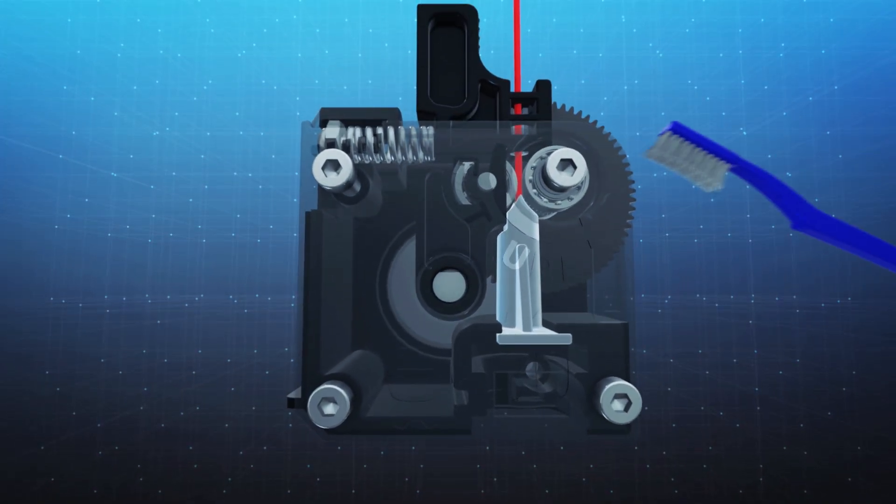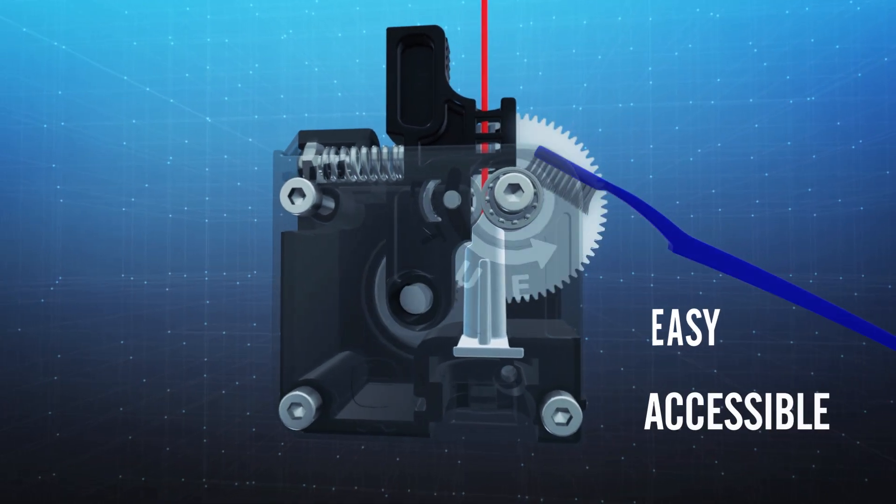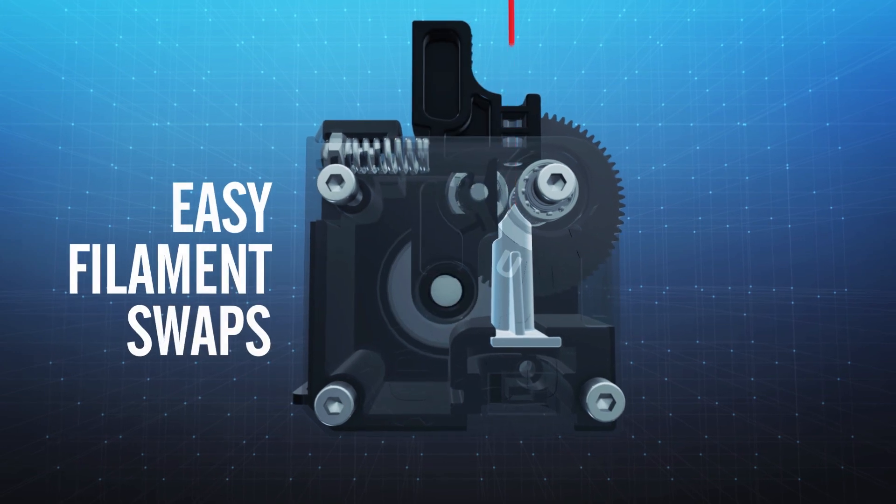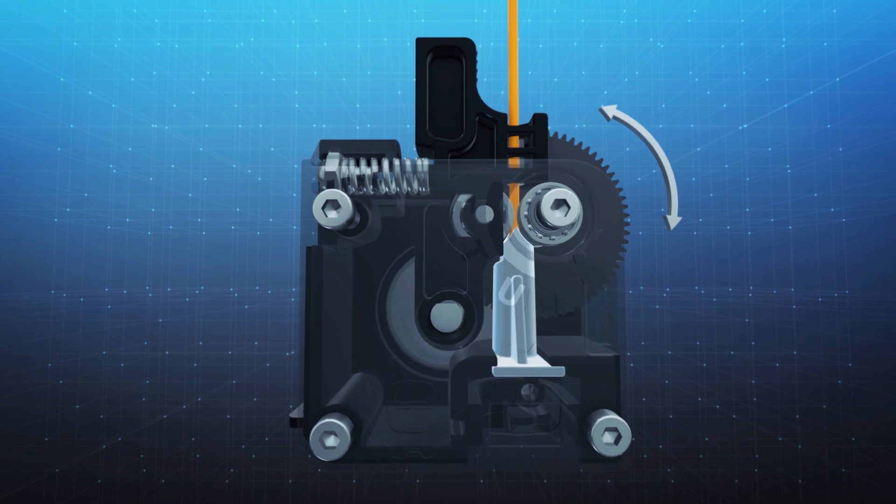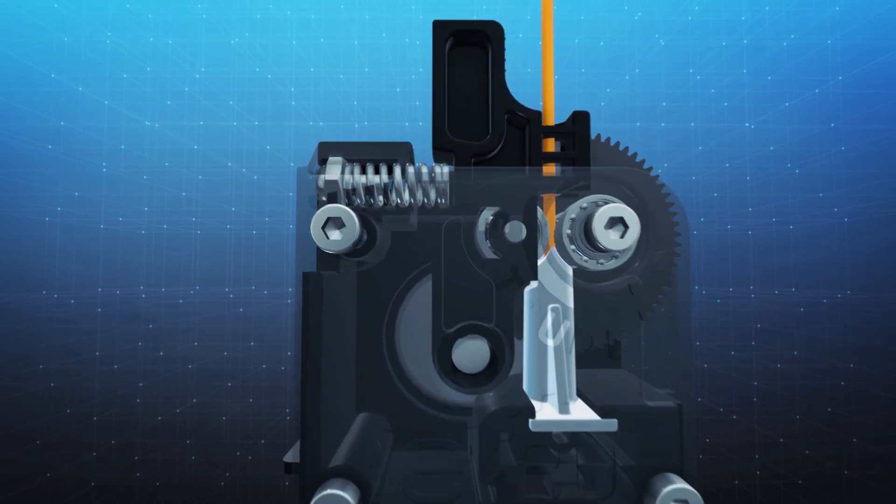Titan is easy to use and maintain. Simple access for maintenance of the drive gear, an accessible thumb wheel, and idler release lever make it easy to load, unload, and manually extrude.